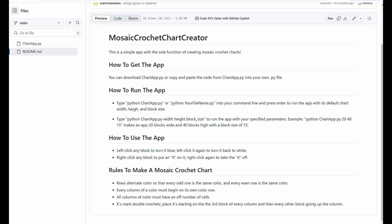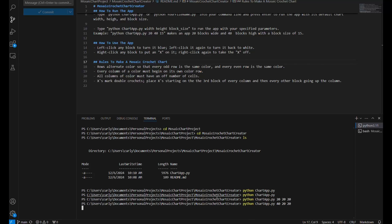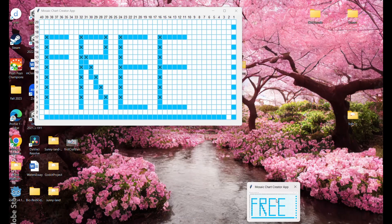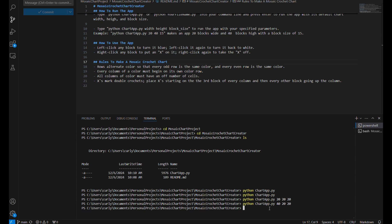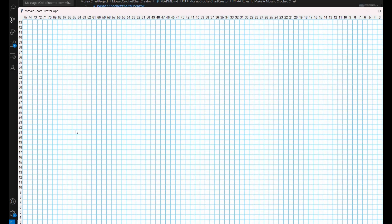So running the app, we're going to go to here and running the app is super simple. First, I need to exit out of this. So there's two ways you can run the app. You can run it just by itself, just Python chart app.py. And then you'll get to the default width and height and block size.